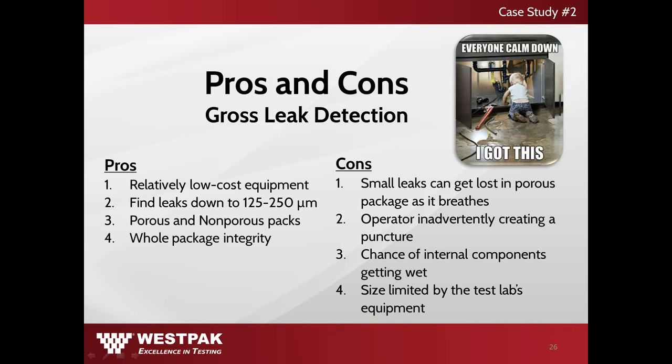Before we open up the floor to questions, let's review some pros and cons of each test method. The advantages of gross leak detection include: one, relatively low cost of equipment; two, the ability to find leaks down to 125 to 250 micrometers; three, testing of both porous and non-porous packaging; and four, the ability to validate the whole package integrity. Some disadvantages would be: one, small leaks can get lost in porous packages as it breathes; two, the operator could inadvertently create a puncture; three, device components could potentially get wet; and four, size limitation by a test lab's equipment.